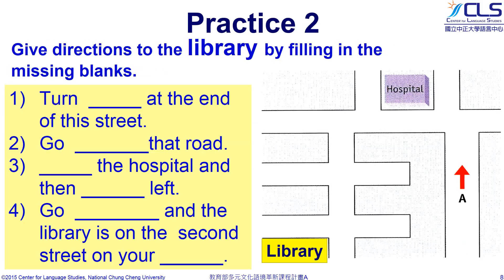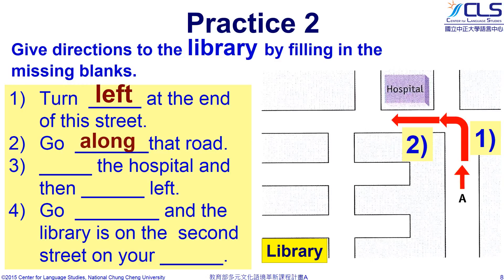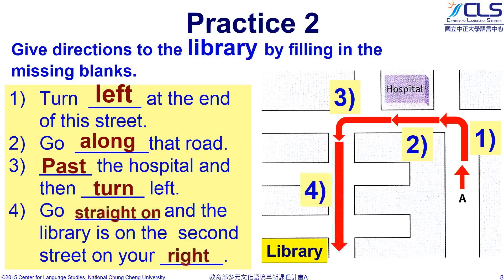Let's try practice two. How can we get to the library? Give directions to the library by filling in the missing blanks. Here are the answers. You can say: turn left at the end of this street, go along that road, pass the hospital, and then turn left. Go straight on, and the library is on the second street on your right.